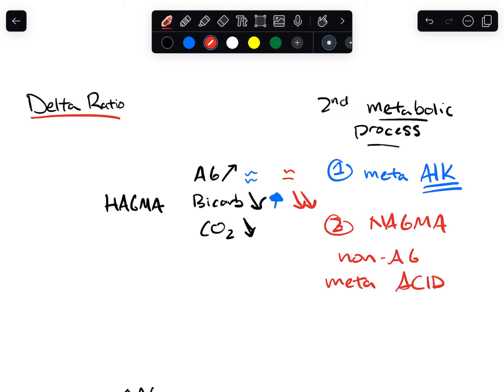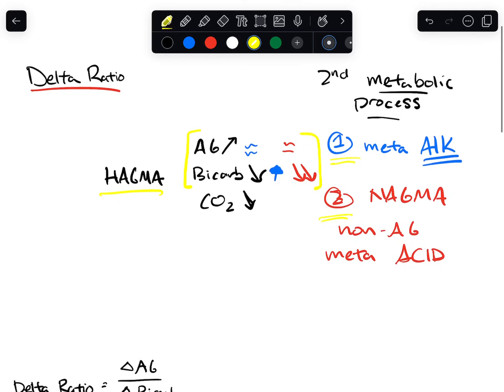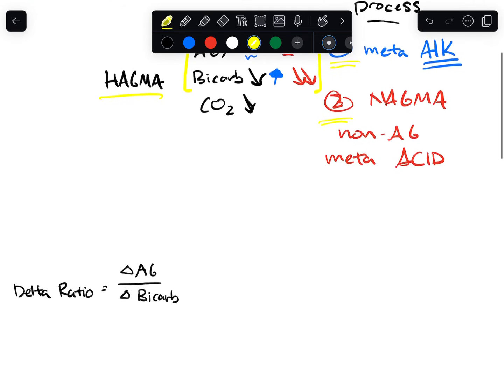So what the delta ratio tries to calculate is effectively, if I can know the ratio of just the anion gap and the bicarb, I should be able to tell, is it just a HAGMA, or if there's one of these things involved as well. So, let's talk about the actual formula itself. It's pretty simple.